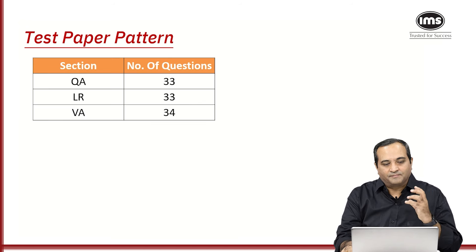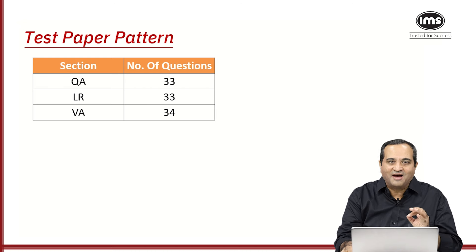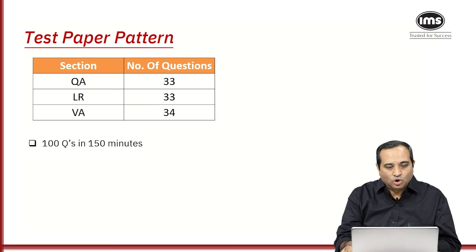So let's look at the test structure. As you can see, JIPMAT is divided into three sections. The first section is QUANT, 33 questions. The next is LR, 33 questions and then we have VERBAL which has 34 questions. So you can easily see I have 100 questions to be attempted in 150 minutes. That means you have an average 1.5 minutes per question. So if you look at the other tests that you are taking, on an average you normally get 45 seconds or 1 minute to solve the question. But here you are getting 1.5 minutes to solve a question.